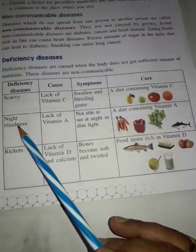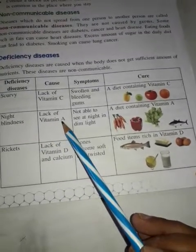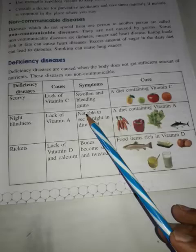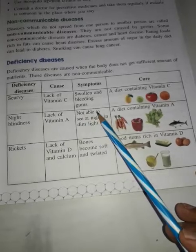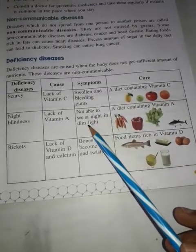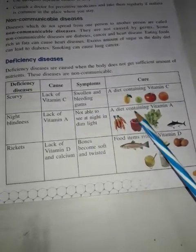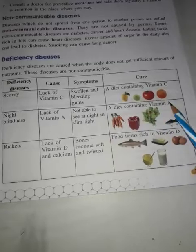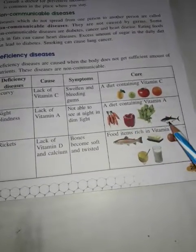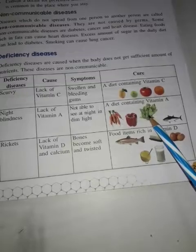Night blindness is caused by a lack of vitamin A. Symptom: not able to see at night or in dim light. Cure: a diet containing vitamin A — such as carrot, capsicum, fish, and spinach.